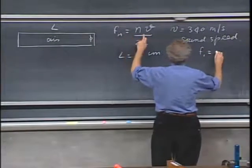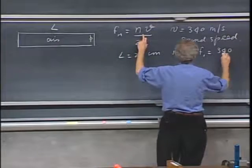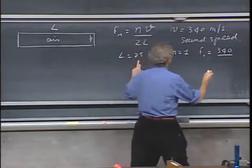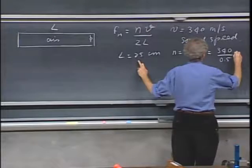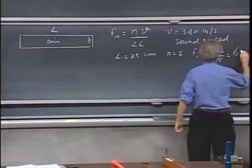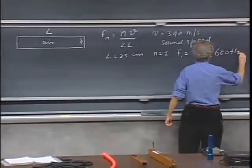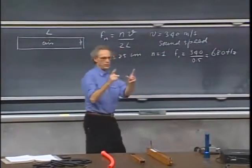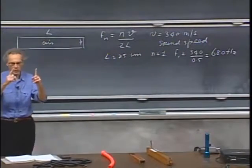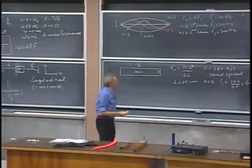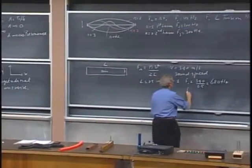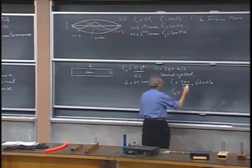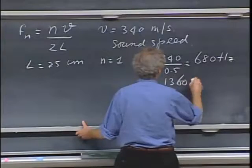So the frequency that we would get equals 340 divided by 2L, which is 0.5 in meters, and so that gives me 680 hertz. So it would be this big, would give you 680 hertz, but the second harmonic, F2, will be double that. So it will be 1360 hertz, and so on.